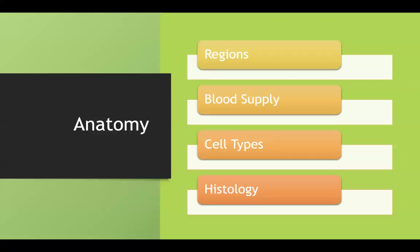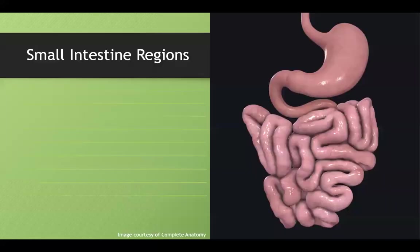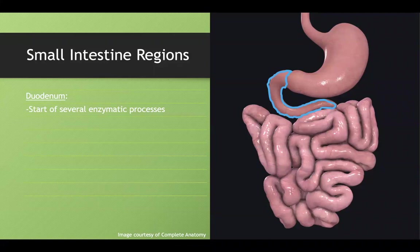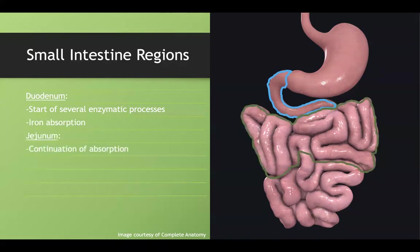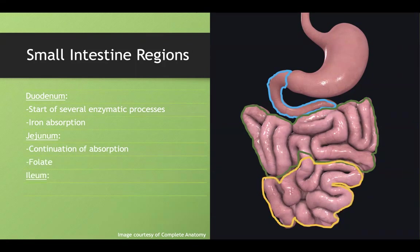Starting with anatomy, the first thing we'll cover are the regions of the small intestine. There are three main regions. The first is the duodenum, highlighted in light blue — an important area for the beginning of nutrient absorption, macromolecule breakdown, and iron absorption. The jejunum is where macromolecules continue to be absorbed, and folate is preferentially absorbed there. The last region is the ileum, where vitamin B12 is absorbed, specifically in the terminal ileum.